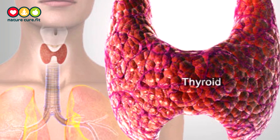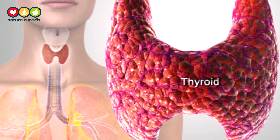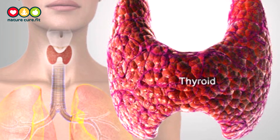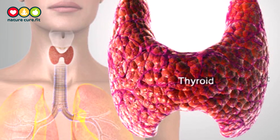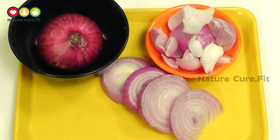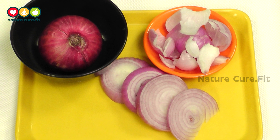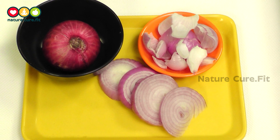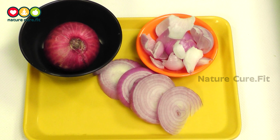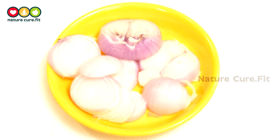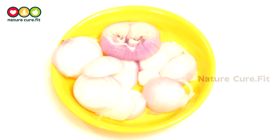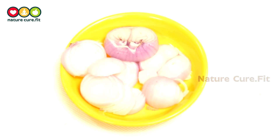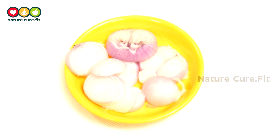Since the thyroid gland is controlled by the pituitary gland and hypothalamus, disorders of these tissues can also affect thyroid function and cause thyroid problems. Onion is well known to be a skin cleaner, bacteria killer, and blood purifier. Another way onion can be helpful is in the case of disturbed thyroid function.